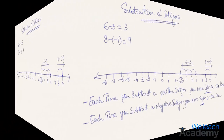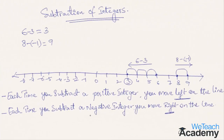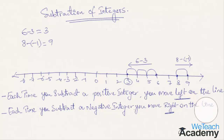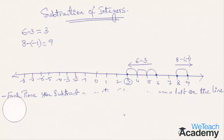In short, each time you want to subtract a positive integer you have to move left on the number line, while if you would like to subtract a negative integer then you have to move towards the right on the number line. Let me show you the same concept with a few more examples.